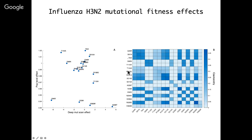We did not find a very strong correlation in this case between what was estimated using deep mutational scanning and the fitness effects we estimated at the population level. Interestingly, both methods estimate that a large number of these mutations are basically neutral — with a fitness of one in our approach, or a log ratio of zero in the deep mutational scanning approach. This identifiability problem is akin to the classic problem of collinearity in a regression-type model, where mutations always co-occur or share phylogenetic ancestry.